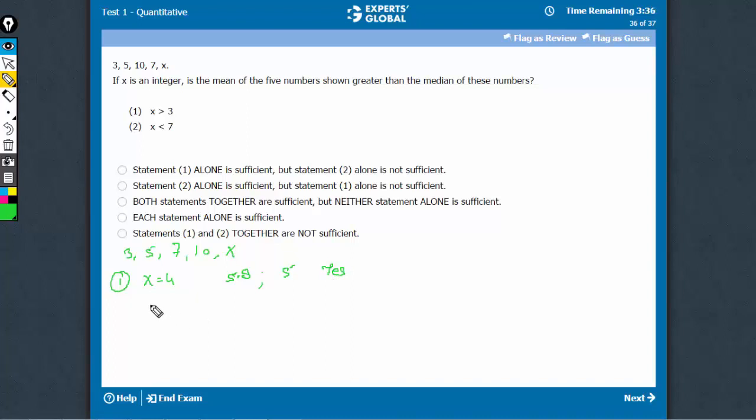However, when x is equal to 7, the mean becomes 25 plus 7, 32 upon 5, the mean becomes 6.4 and this is 7. So 7 comes here, the median becomes 7 now. So 6.4 is the mean, 7 is the median. Mean is no longer greater than median. So the answer becomes no. Yes and no both are possible and therefore statement 1 is not sufficient.